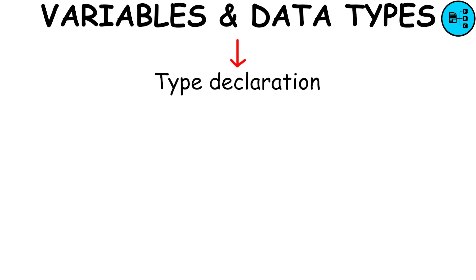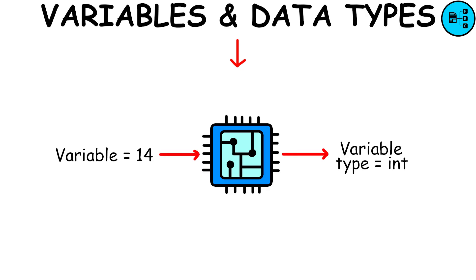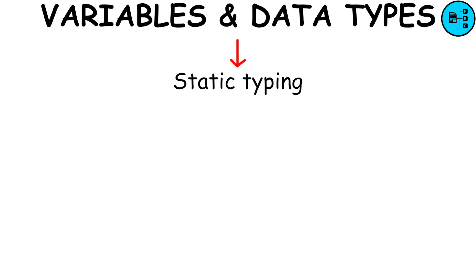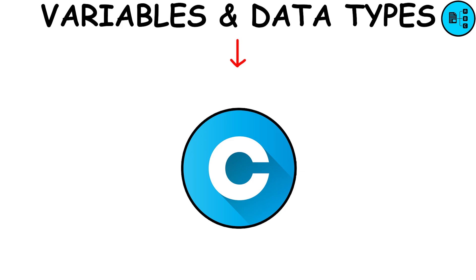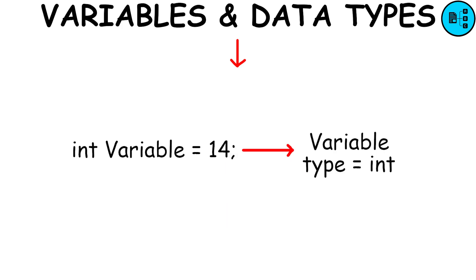In terms of type declaration, there are two main approaches. Dynamic typing: Languages like Python determine the type of a variable automatically, without requiring explicit declaration. Static typing: Languages like C mandate explicit declaration of variable types, such as int or float, before use.